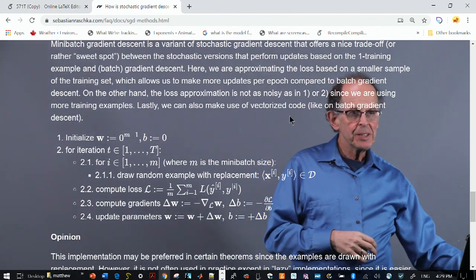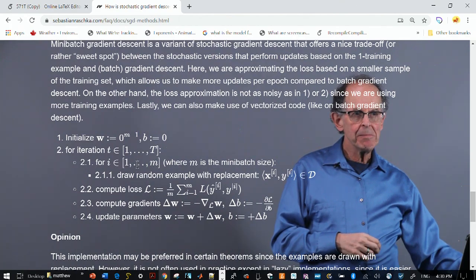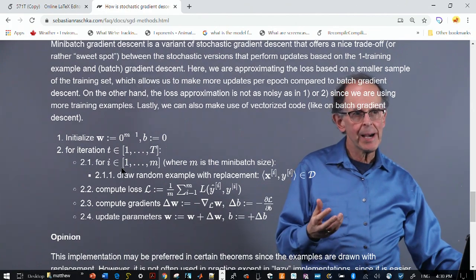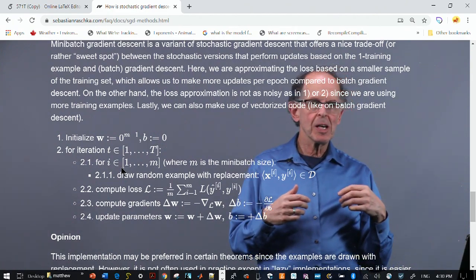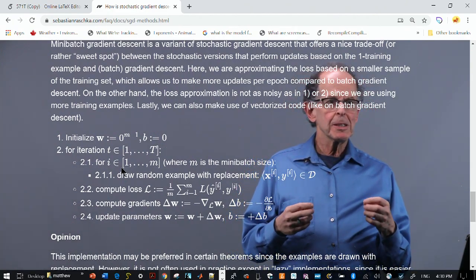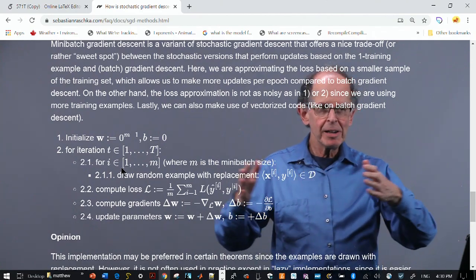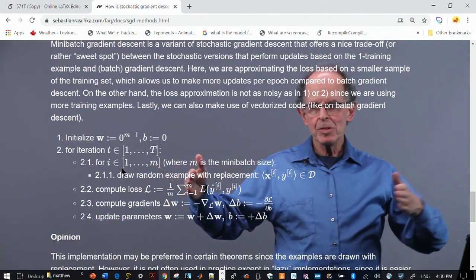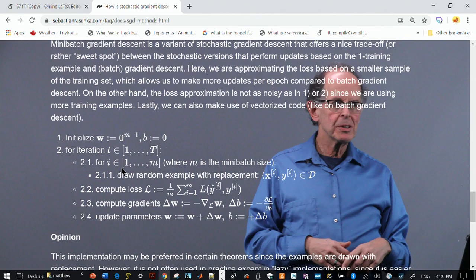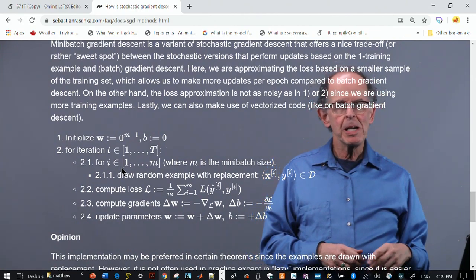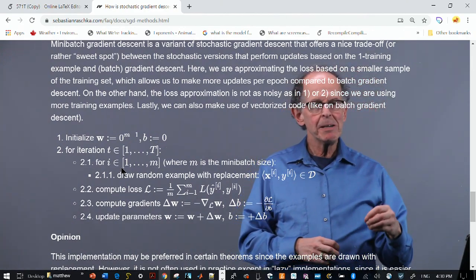So now for each iteration, for the number of iterations, you look at M data elements. So you draw M with replacement from the entire data set. So now when you get to step 2.2, you're now going to compute the average loss over M elements. That's why they call it a batch. So the entire data set, which is N elements, is divided to batches of M each. And you work with each batch. So once you have computed step 2.2, we go through the same procedure as before, but you're only going to do it the number of times that M divides into N.